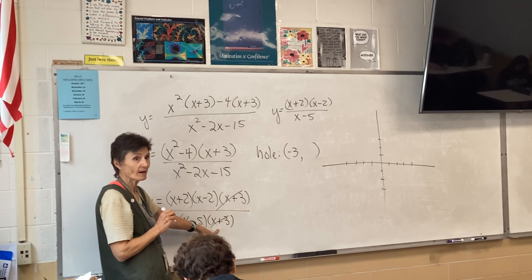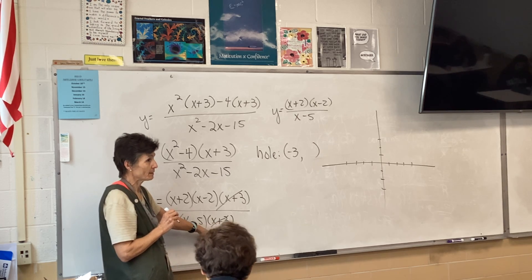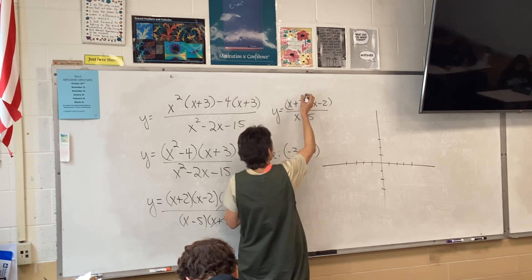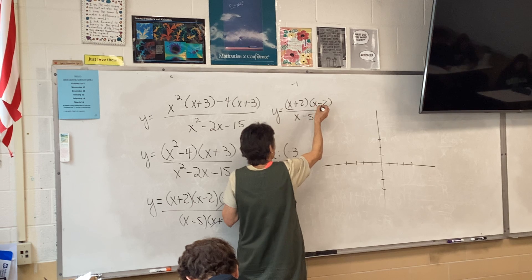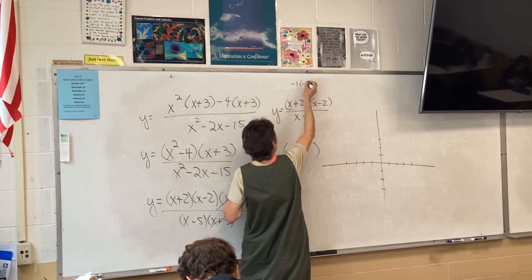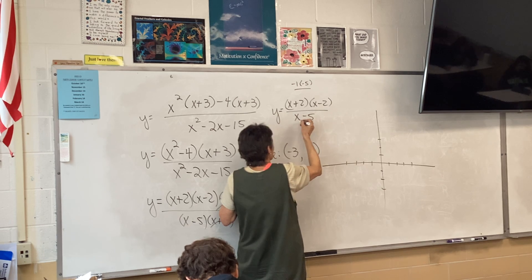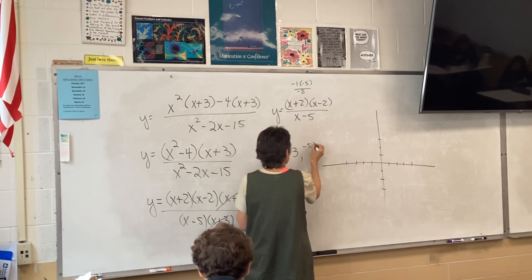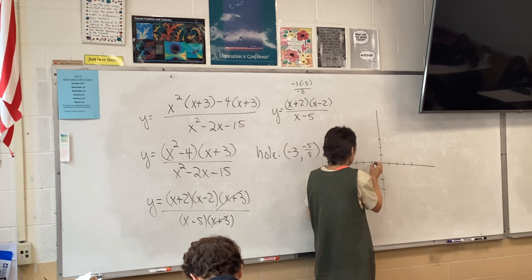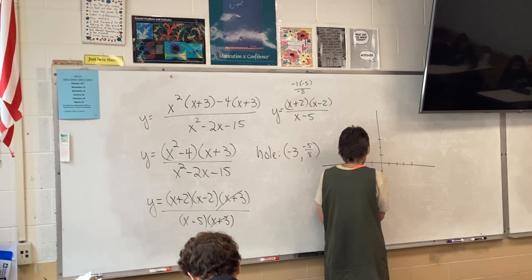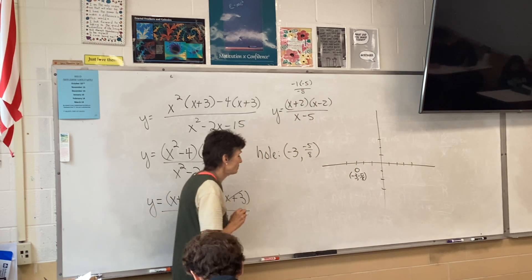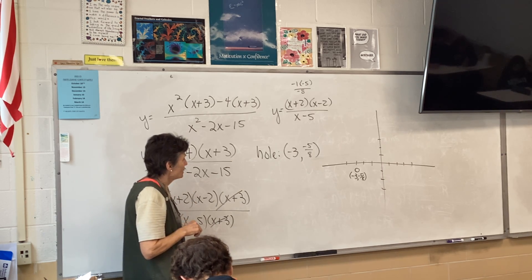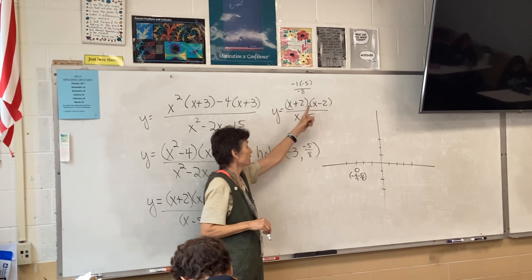How do I find the y-coordinate? Plug it back in to that problem up there. So I'm going to have negative 3 plus 2, which is negative 1, negative 3 minus 2, which is negative 5, and negative 3 minus 5, which is negative 8. So what is that going to be? Negative 5/8. So negative 3, negative 5/8, I have an opening in my picture. The curve is going to pass through there.